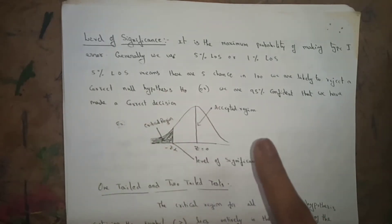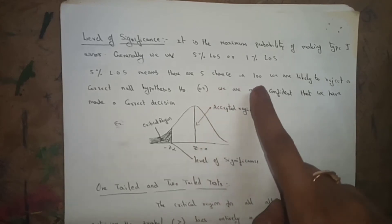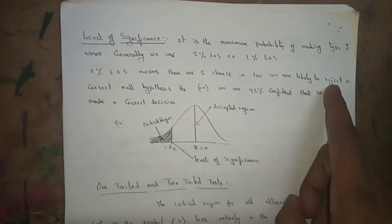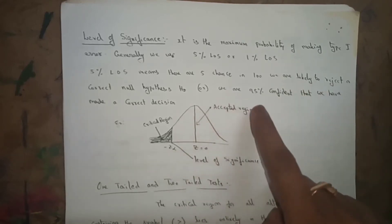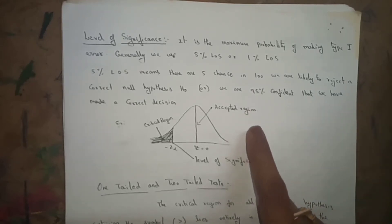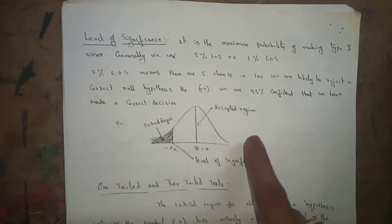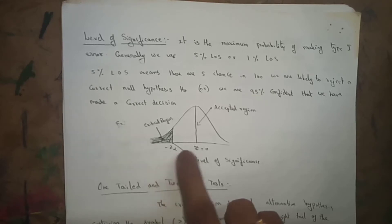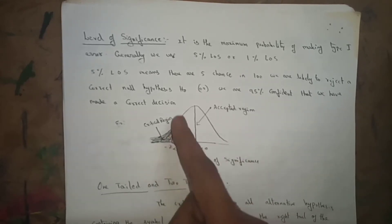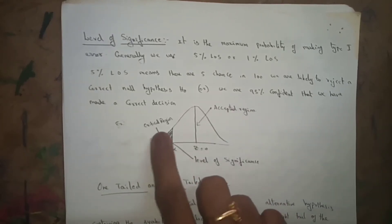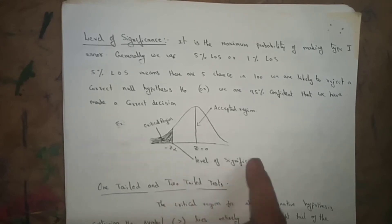5% level of significance means there is a 5% chance in 100% that we are likely to reject a correct null hypothesis H0, or equivalently, we are 95% confident we have made a correct decision. On the bell-shaped curve, with Z=0, the critical region of only 5% lies at the tails beyond −Z_alpha and +Z_alpha. The remaining area is the accepted region.